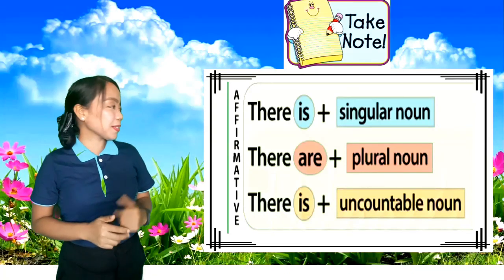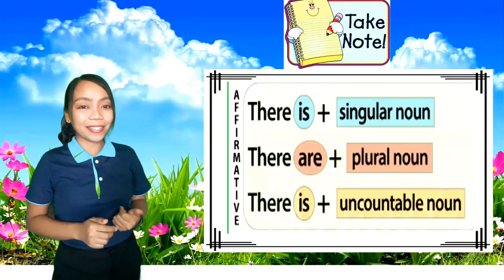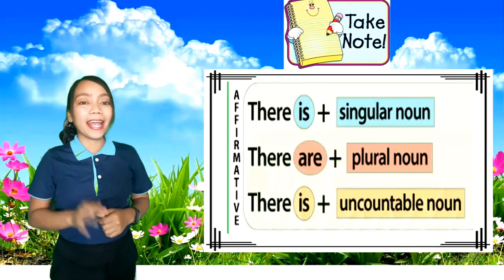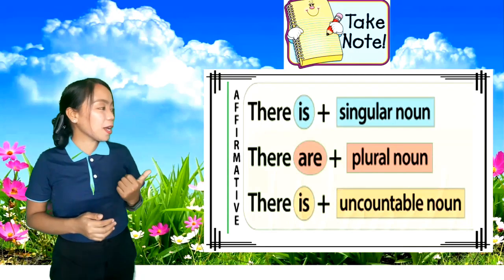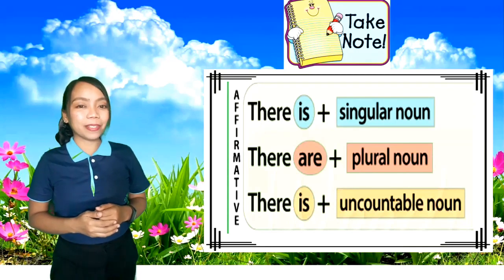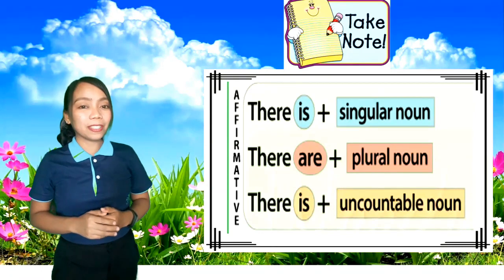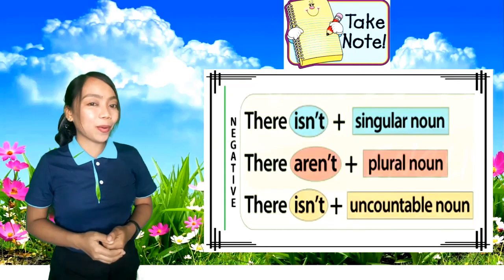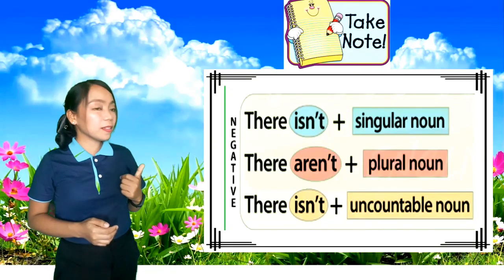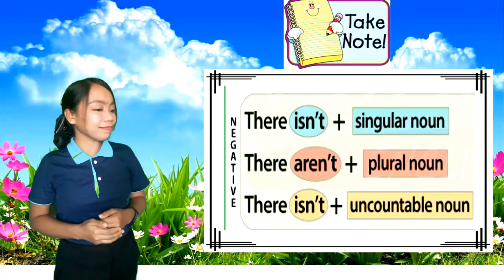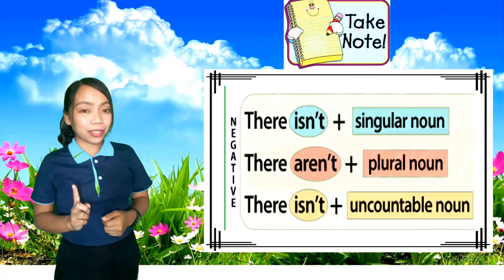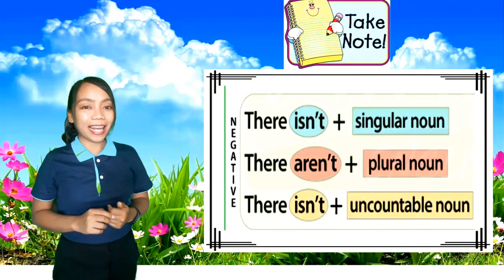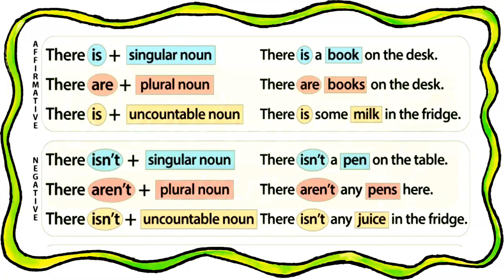Take note: we use 'there is' plus a singular noun, 'there are' plus a plural noun, and 'there is' plus an uncountable noun for affirmative sentences. For negative sentences, we use 'there isn't' plus a singular noun, 'there aren't' plus a plural noun, and 'there isn't' plus an uncountable noun.